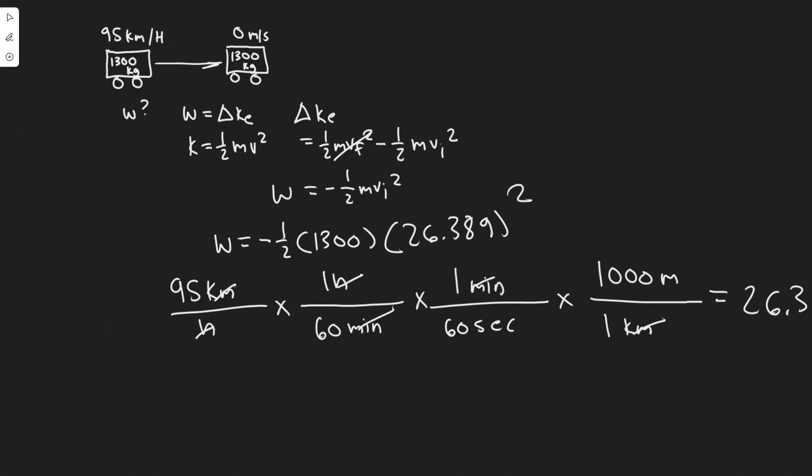So minus 1 half times 1300 times 26, and I'm going to use the exact value here actually, squared.